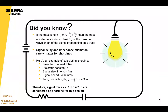Signal delay and impedance mismatching rarely matter if you have short lines. In this example, if you have a trace that's less than two inches, that would be considered a short line, and that's not something you have to worry about.